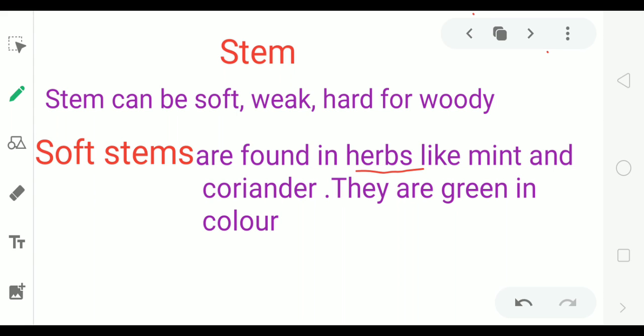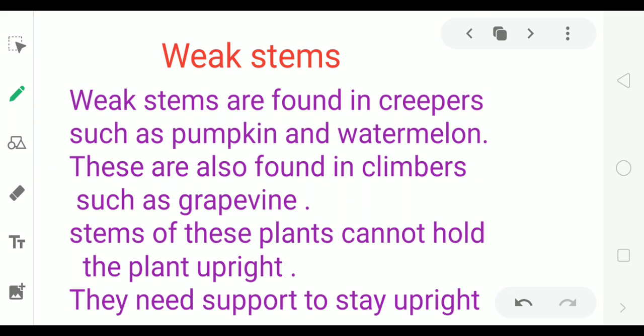Weak stems are found in creepers such as pumpkin and watermelon. These are also found in climbers such as grapevine. Stems of these plants cannot hold the plant upright. They need support to stay upright.